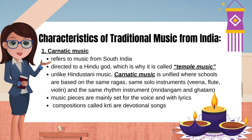Characteristics of traditional music from India. 1. Carnatic music refers to music from South India, directed to a Hindu god, which is why it is called temple music. Unlike Hindustani music, Carnatic music is unified where schools are based on the same ragas, same solo instruments — veena, flute, violin — and the same rhythm instruments, mridangam and ghatam. Music pieces are mainly set for the voice and with lyrics. Compositions called krti are devotional songs.